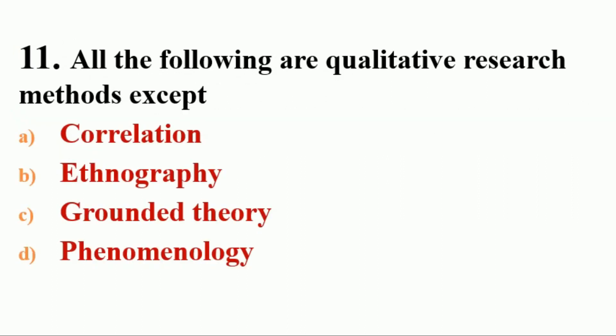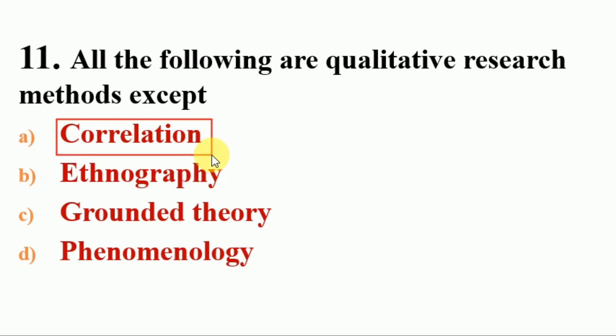Next question: all of the following are qualitative research methods except — options: A. correlation, B. ethnography, C. grounded theory, D. phenomenology. The answer is A, correlation. Correlation is an example of a quantitative research method, while ethnography, grounded theory, and phenomenology are qualitative research methods.